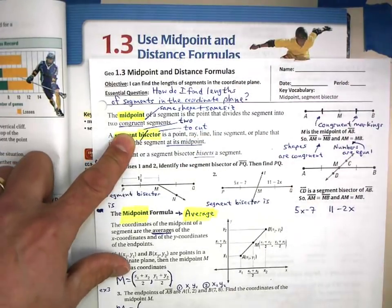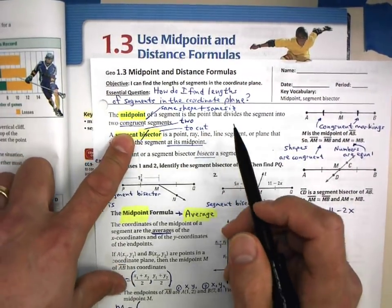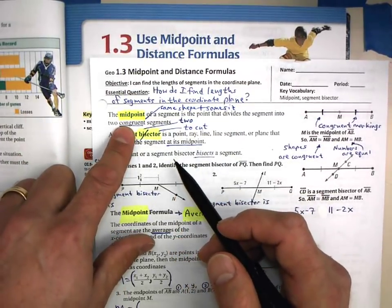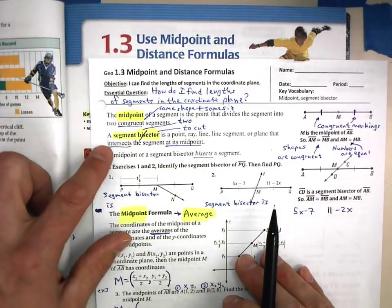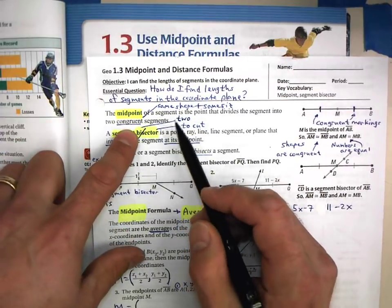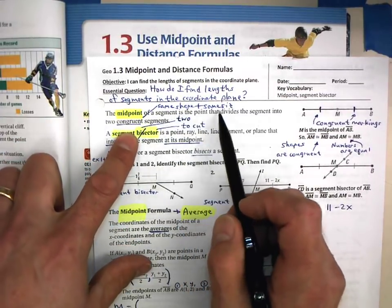We'll see that word over and over again. I think we learned that in section 1.2. So a midpoint cuts the thing into two shapes that are the same shape and same size.